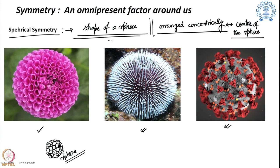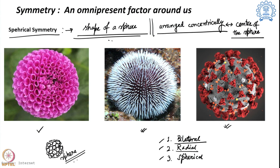So there are three different symmetries: bilateral, radial, and spherical symmetry. Bilateral is the symmetry around a plane, radial is the symmetry around an axis, and spherical symmetry requires a sphere first and then a concentric arrangement around the center. These are the three major portions of the symmetry we encounter.